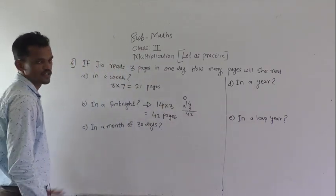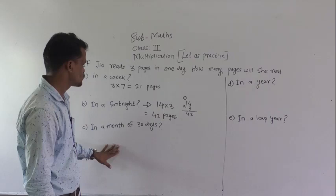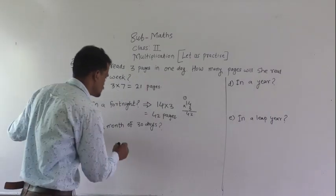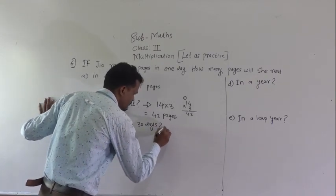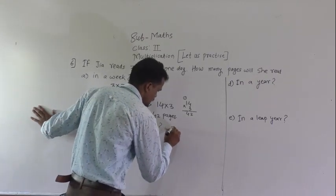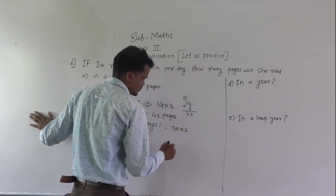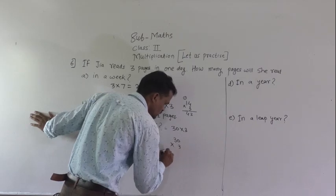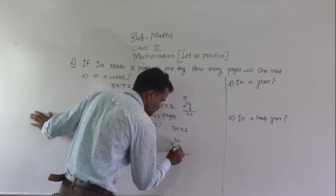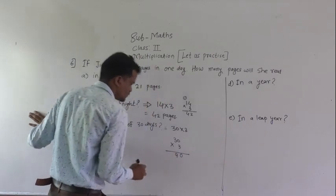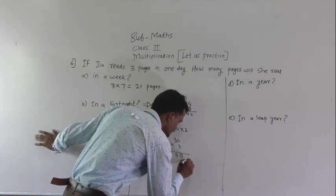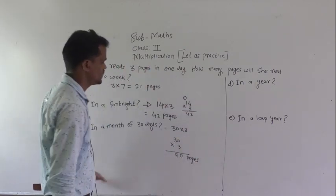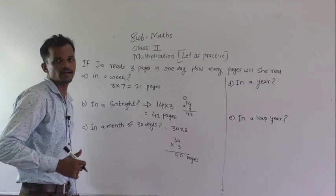Then in a month of 30 days. In each day she reads 3 pages, so in 30 days she will read 30 multiplied by 3 pages. Solve this 30 into 3. 3 into 0 is 0. 3 threes are 9. So in 30 days she will read 90 pages.